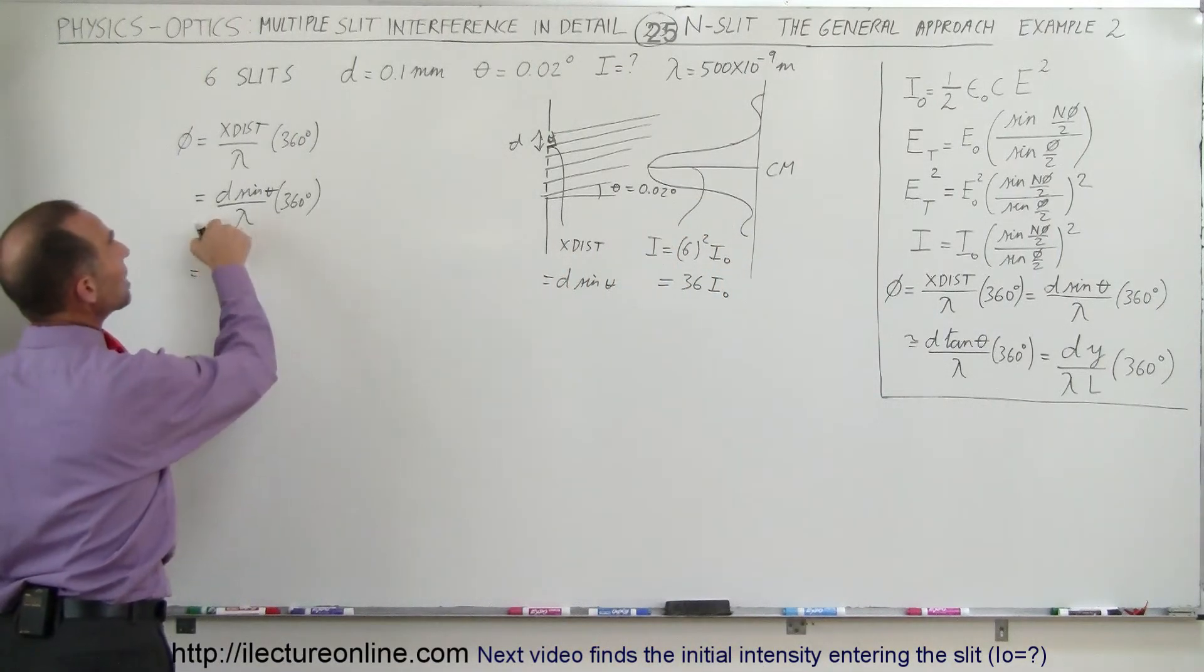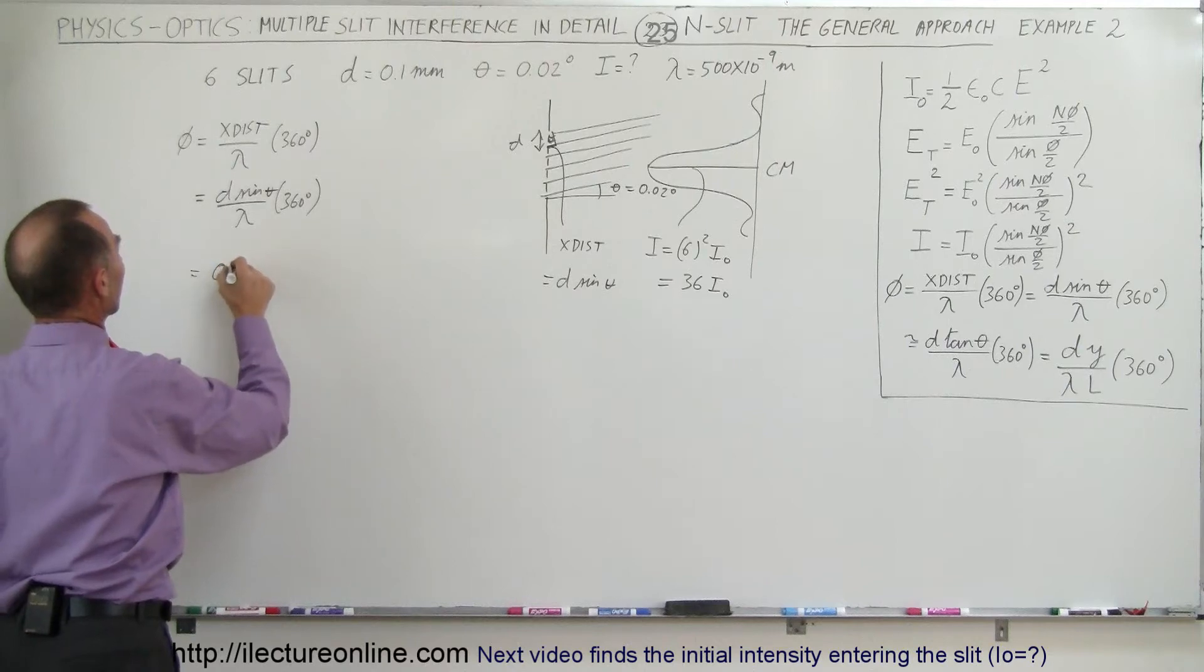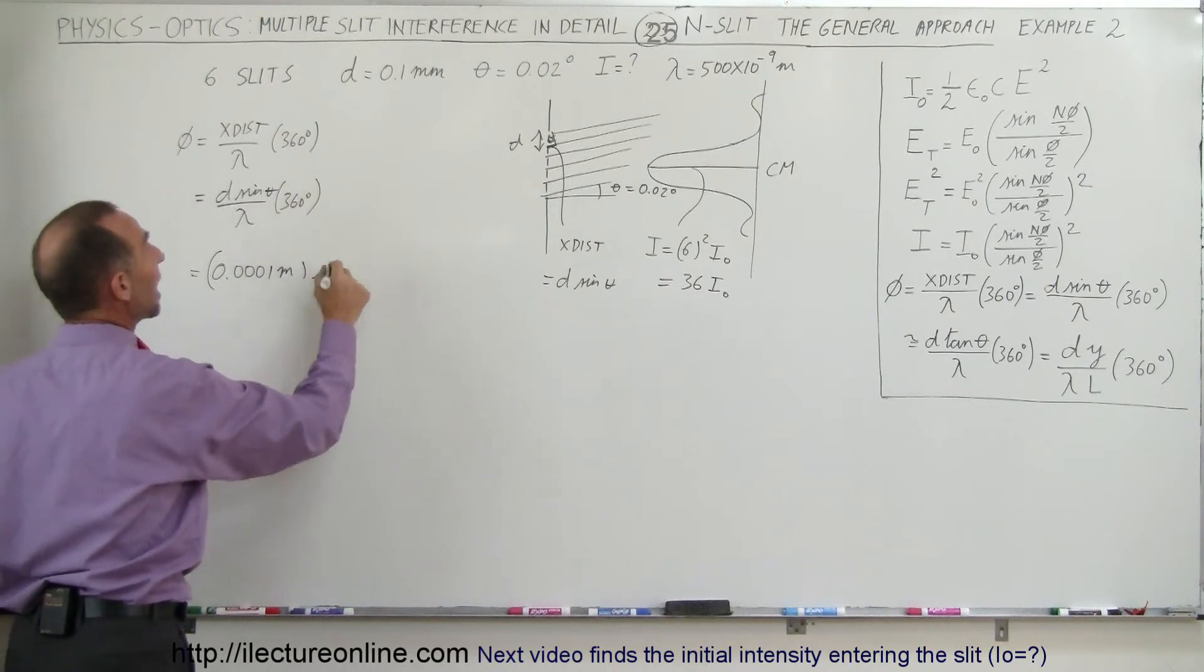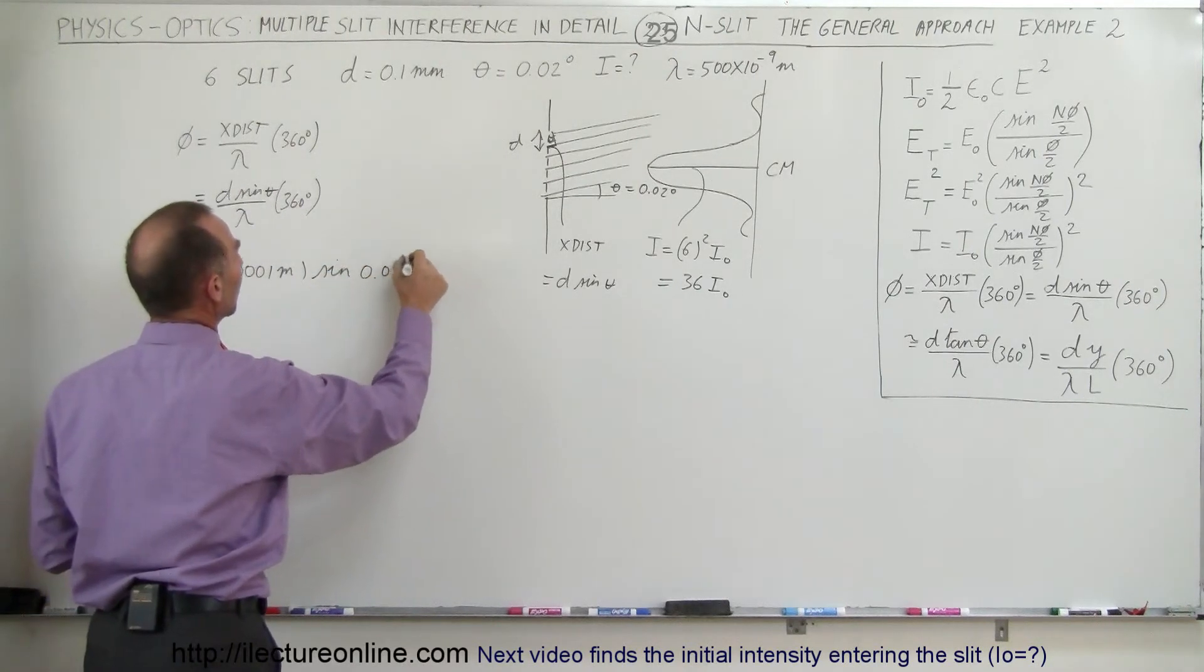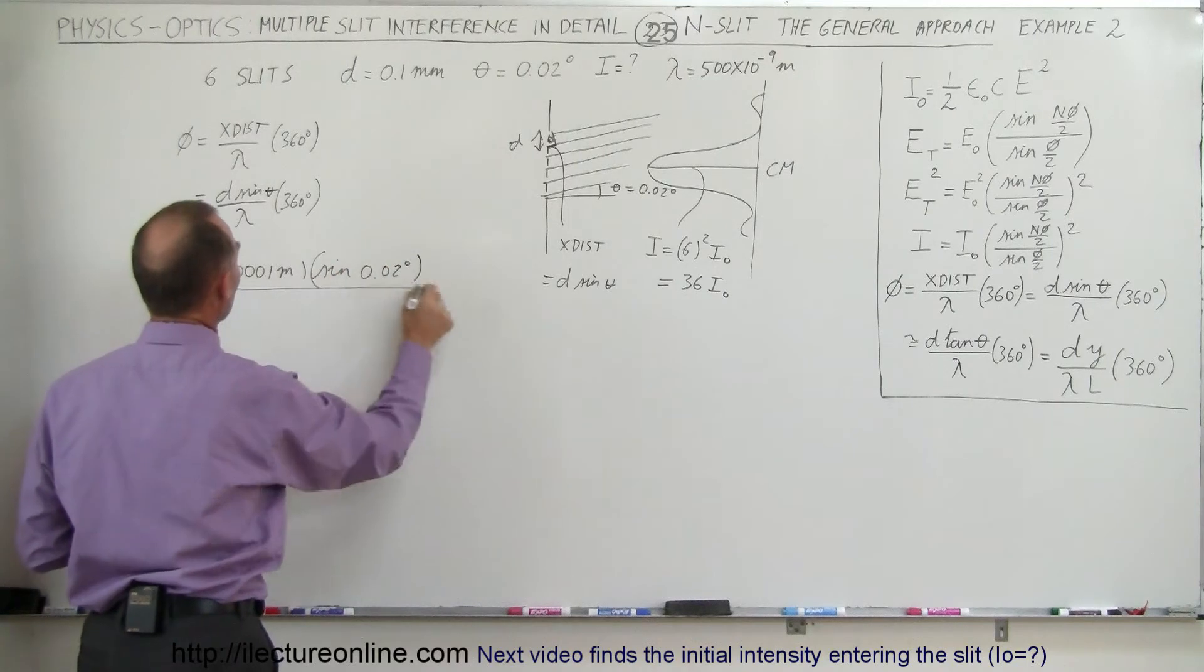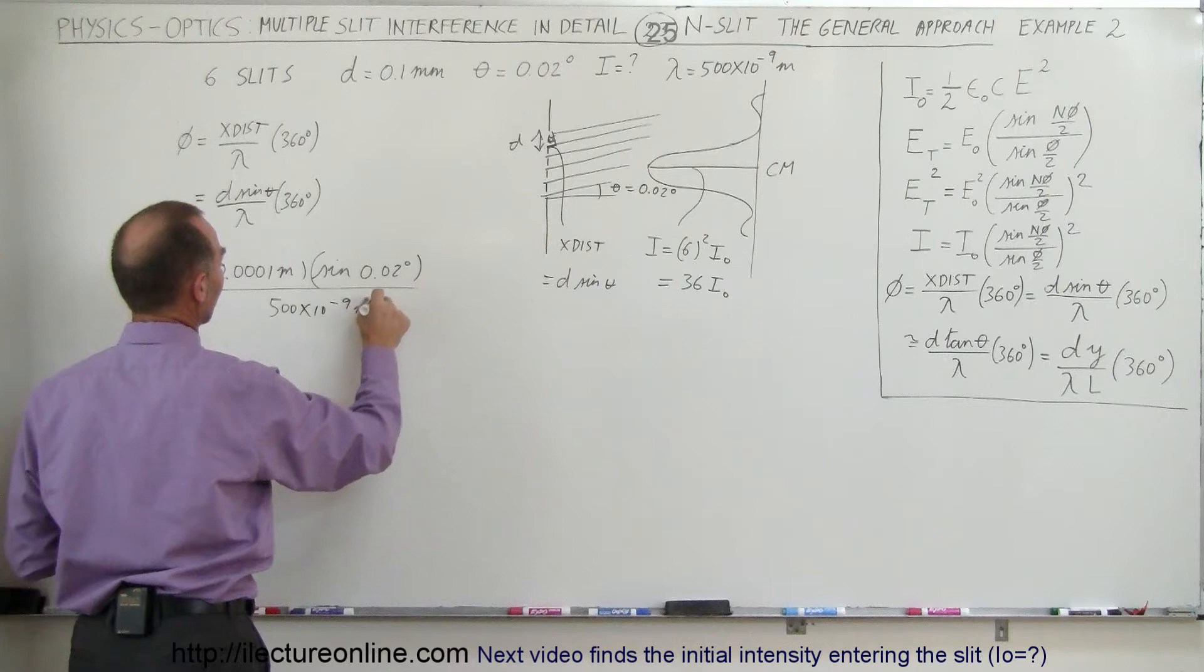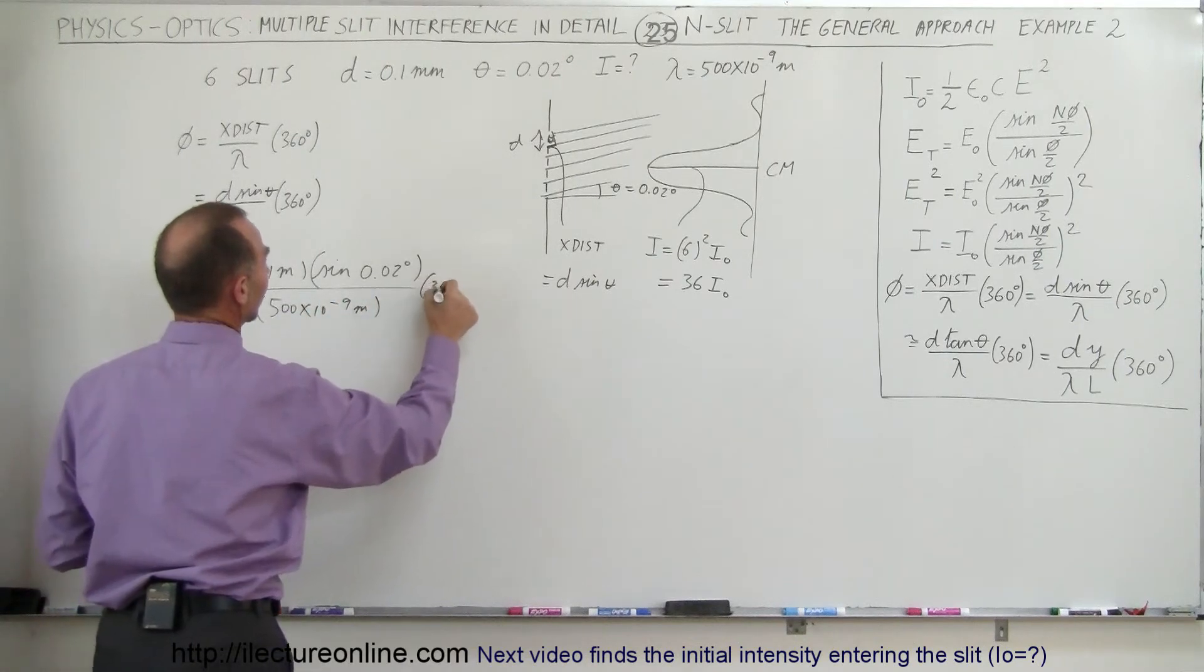So this is equal to d, which is 0.0001 meter, times the sine of the angle theta, which is 0.02 degrees, divided by the wavelength, which is 500 times 10 to the minus 9 meters, and times 360 degrees.